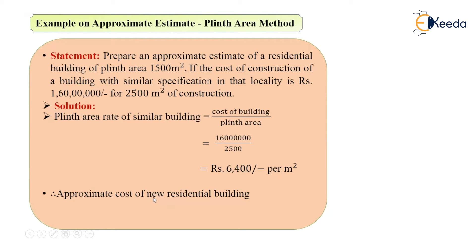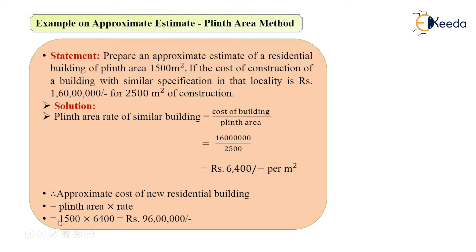Now let's calculate the approximate cost of the new or proposed building in the same locality. The formula is plinth area multiplied by rate — it is simply area into rate. The rate is 6400 and the plinth area of the proposed building is 1500 meter square. So 1500 multiplied by 6400 gives a value of 96 lakh rupees.